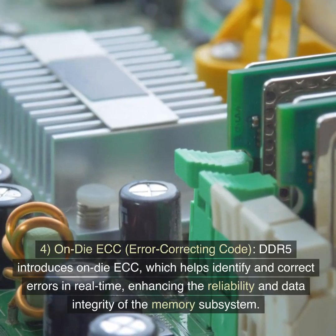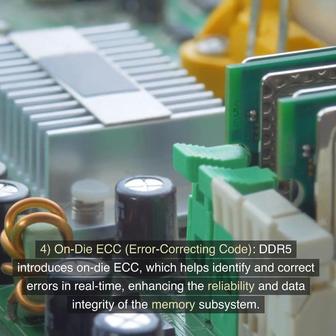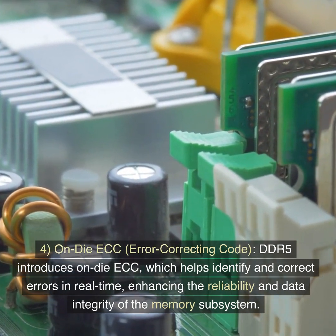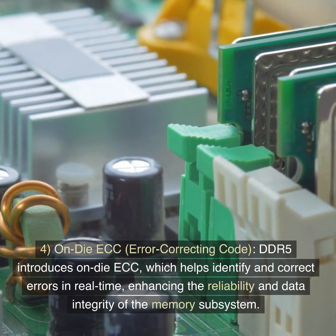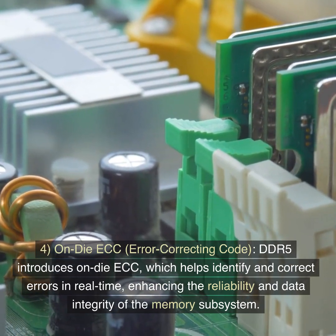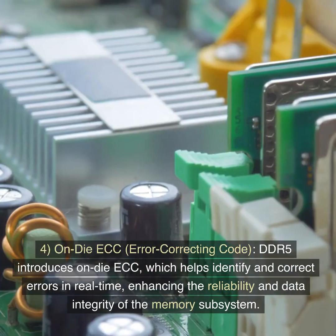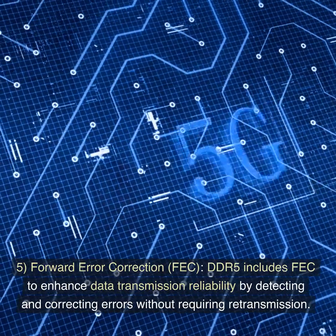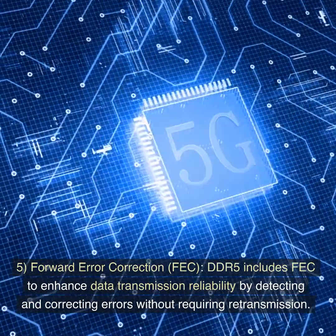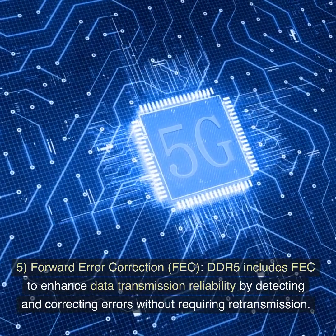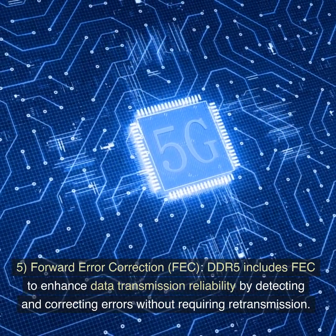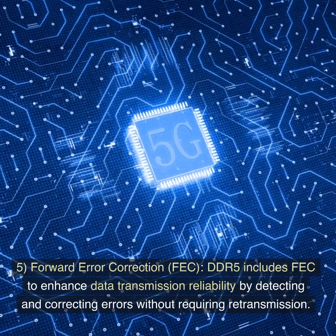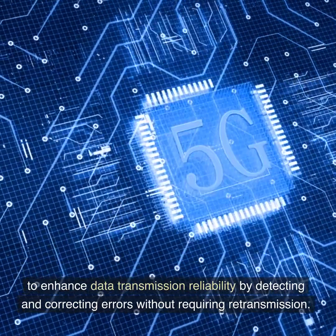Fourth, On-Die ECC (Error Correcting Code). DDR5 introduces on-die ECC, which helps identify and correct errors in real time, enhancing the reliability and data integrity of the memory subsystem. Fifth, Forward Error Correction (FEC). DDR5 includes FEC to enhance data transmission reliability by detecting and correcting errors without requiring retransmission.